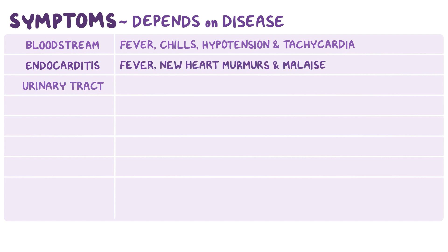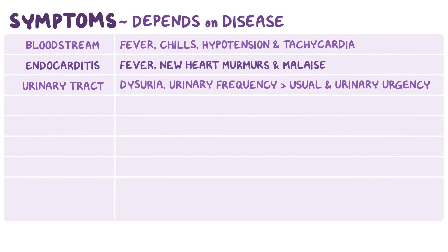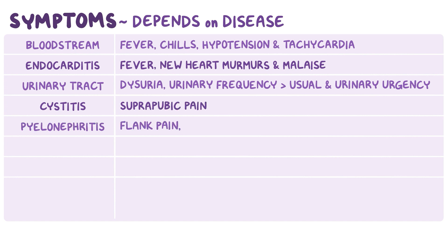With urinary tract infections in general, symptoms include dysuria — pain or burning sensation during urination — urinary frequency, meaning needing to urinate more often than usual, and urinary urgency, meaning a strong need to urinate. With cystitis, there's also suprapubic pain, and with pyelonephritis, there might be flank pain and systemic symptoms like fever, chills, nausea, and vomiting.